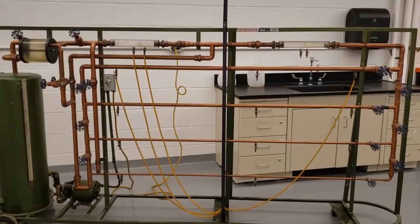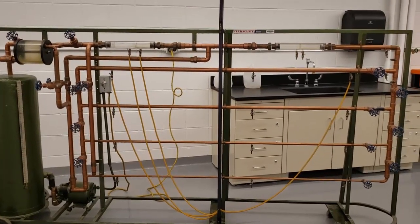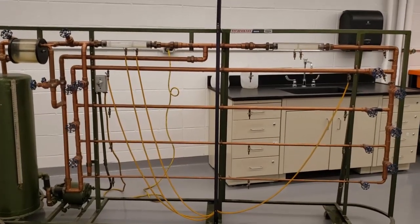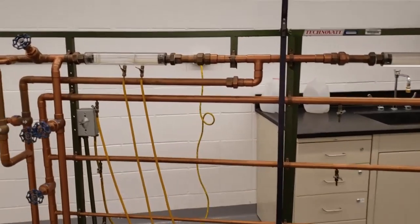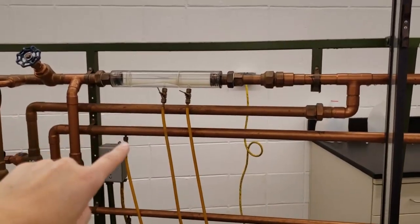First, what is the flow through the pipe? And two, what is the pressure drop between a point upstream of the pipe and downstream of the pipe? So, for example, for the one inch pipe, this is our upstream location.